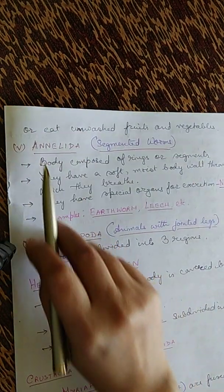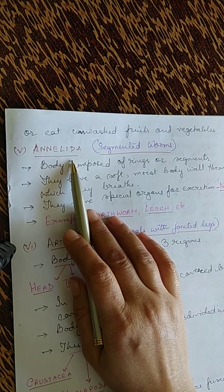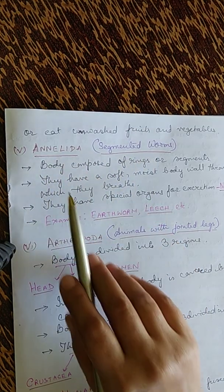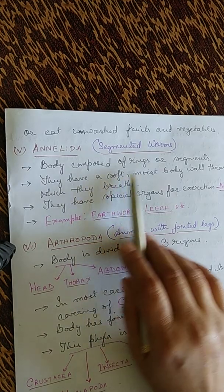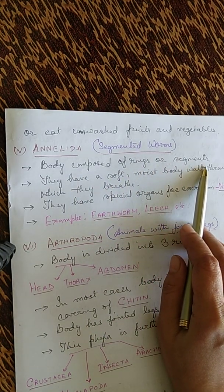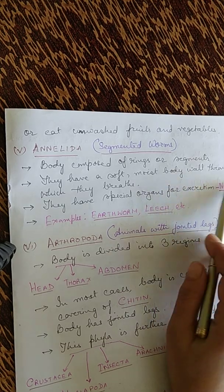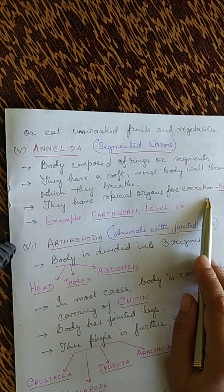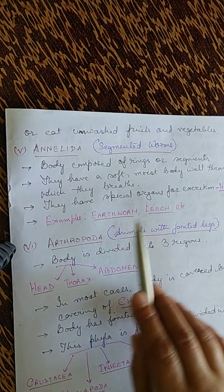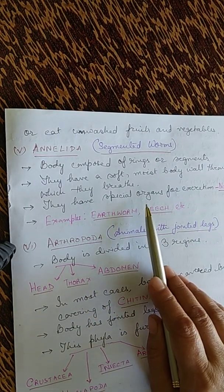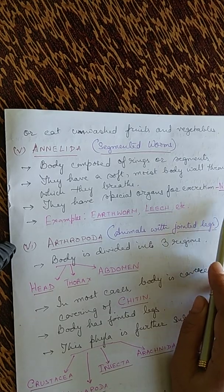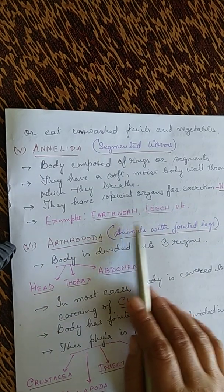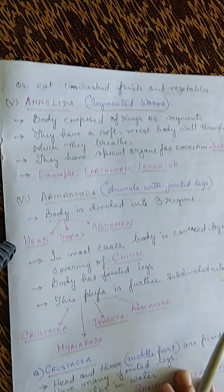The fifth phylum is Annelida, meaning segmented worms. Their body is composed of rings or segments. They have a soft, moist body wall through which they breathe. They have special organs for excretion called nephridia. Examples include earthworm and leech.